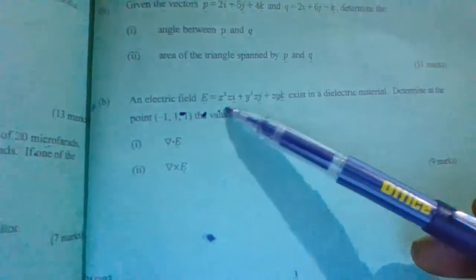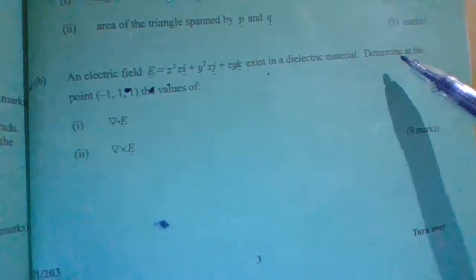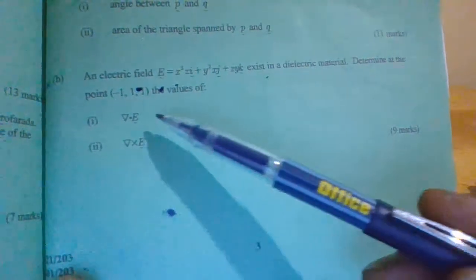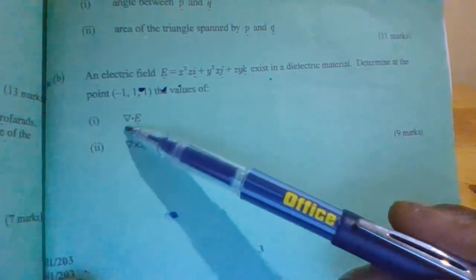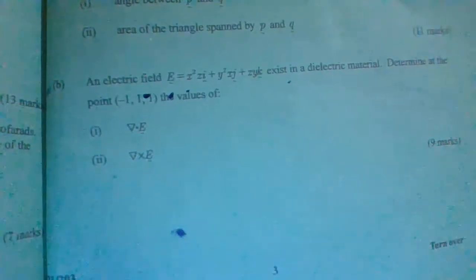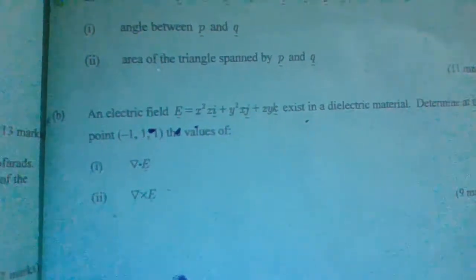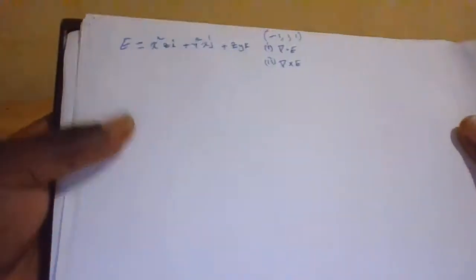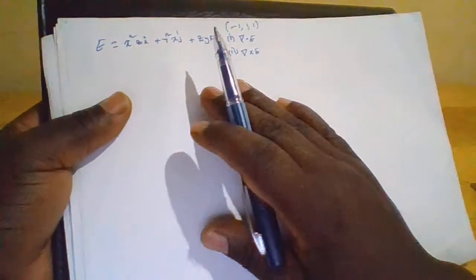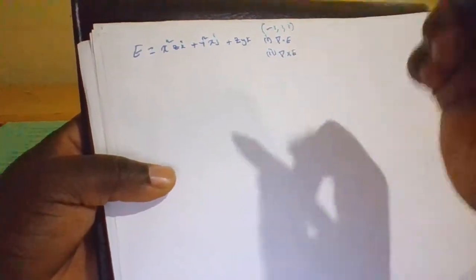An electric field is given and exists in a dielectric material. Determine at a given point the values of del dot E (divergence of electric field) and del cross E (curl of electric field). This is a 9-mark problem.